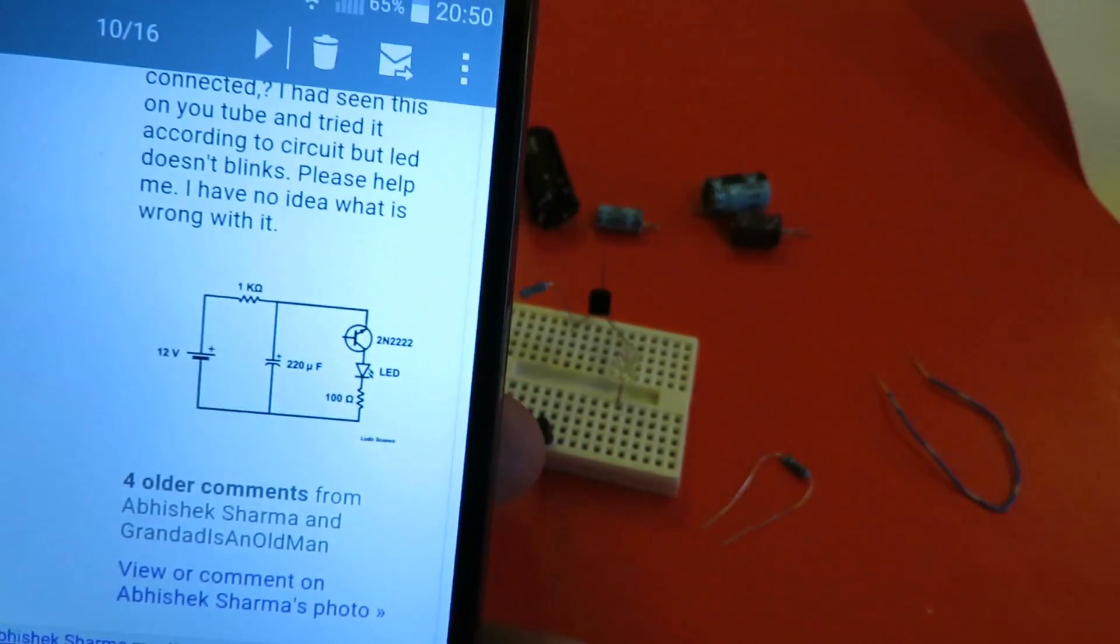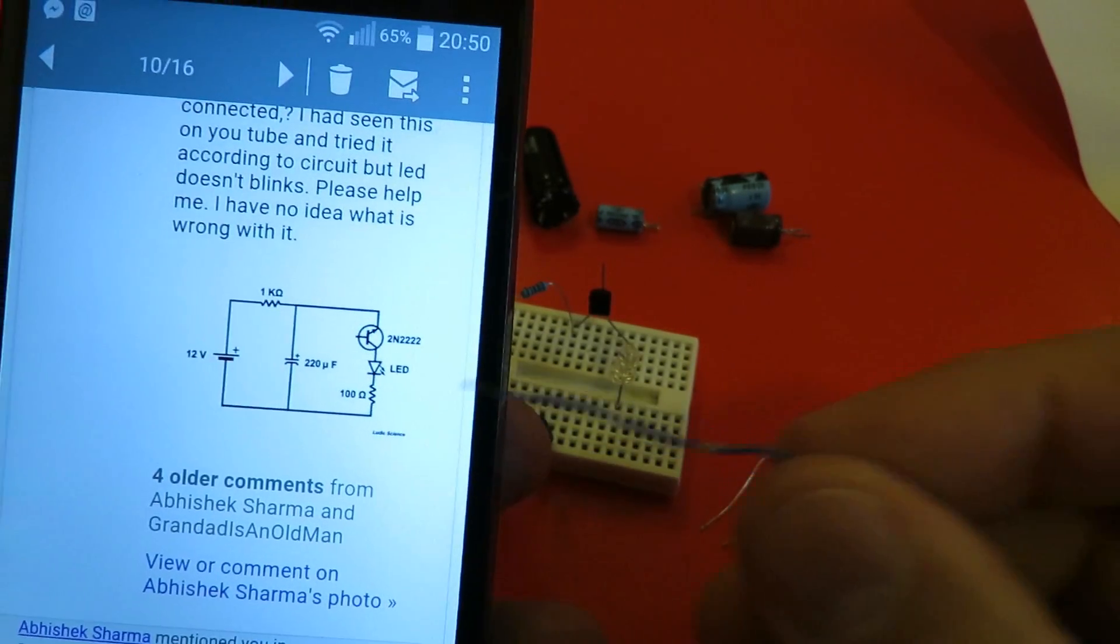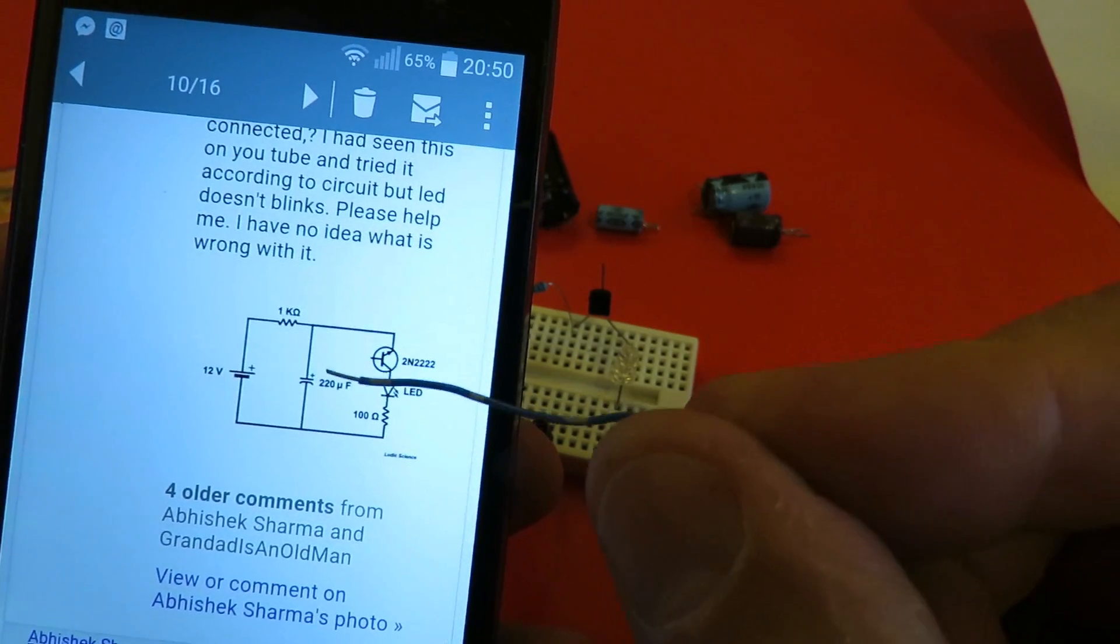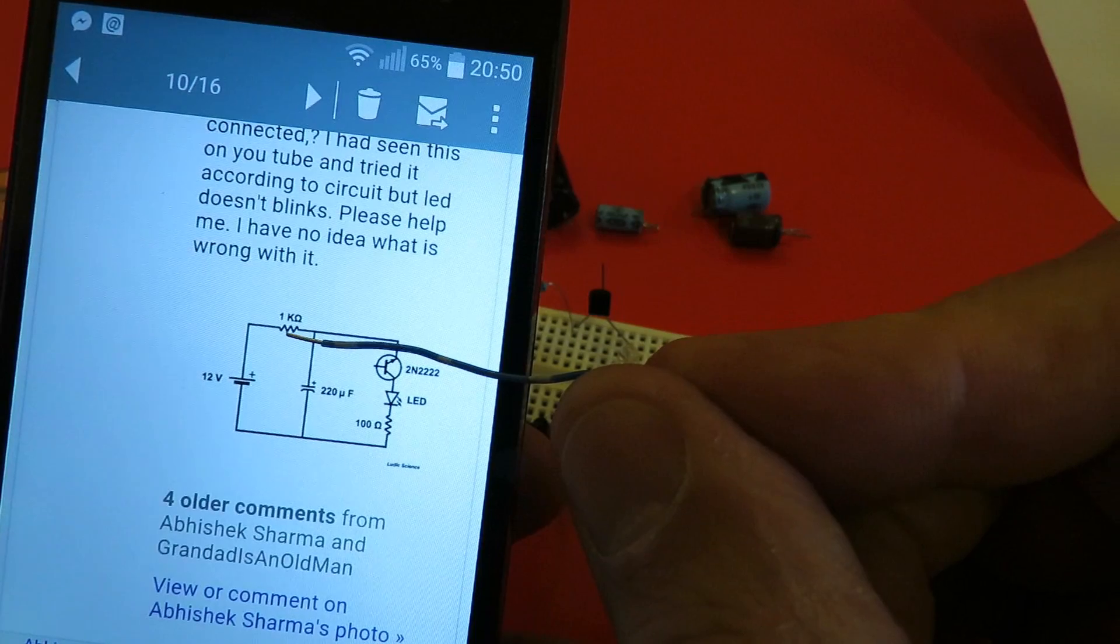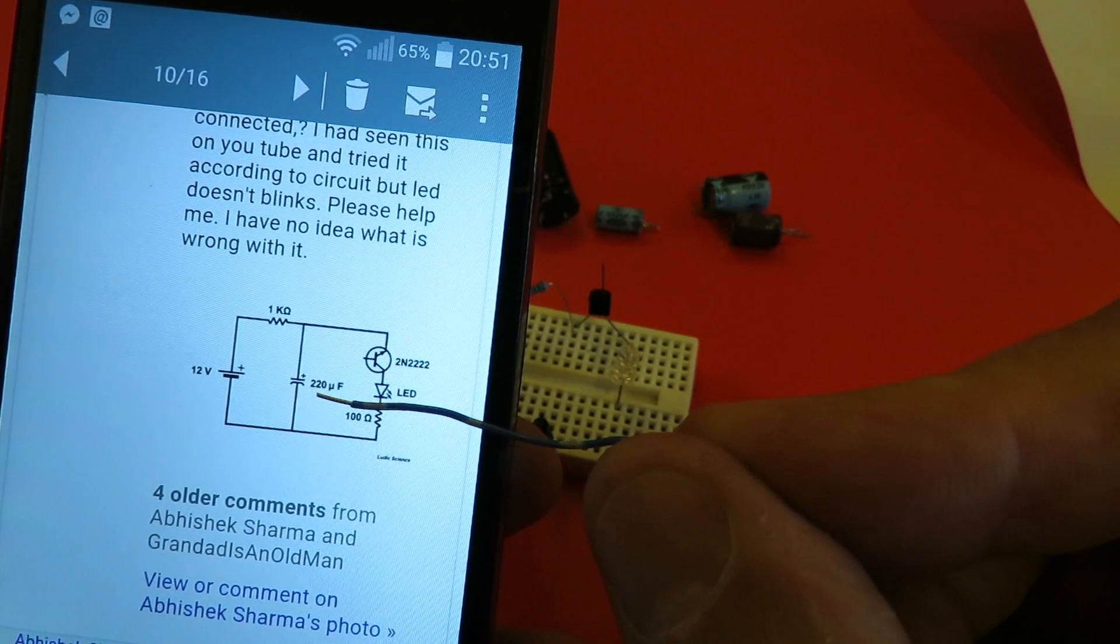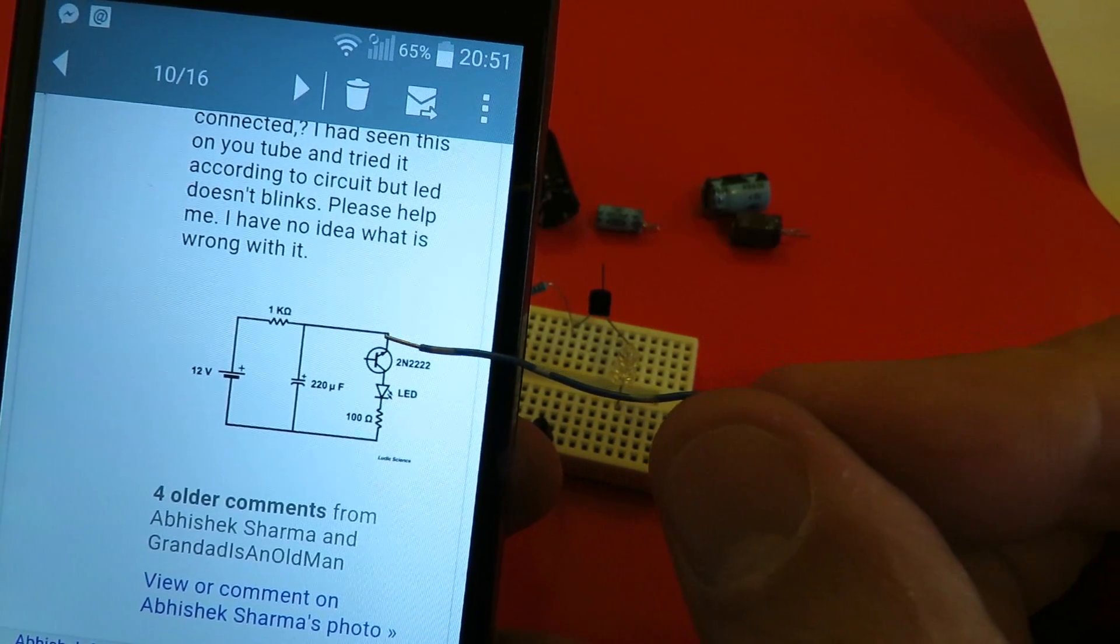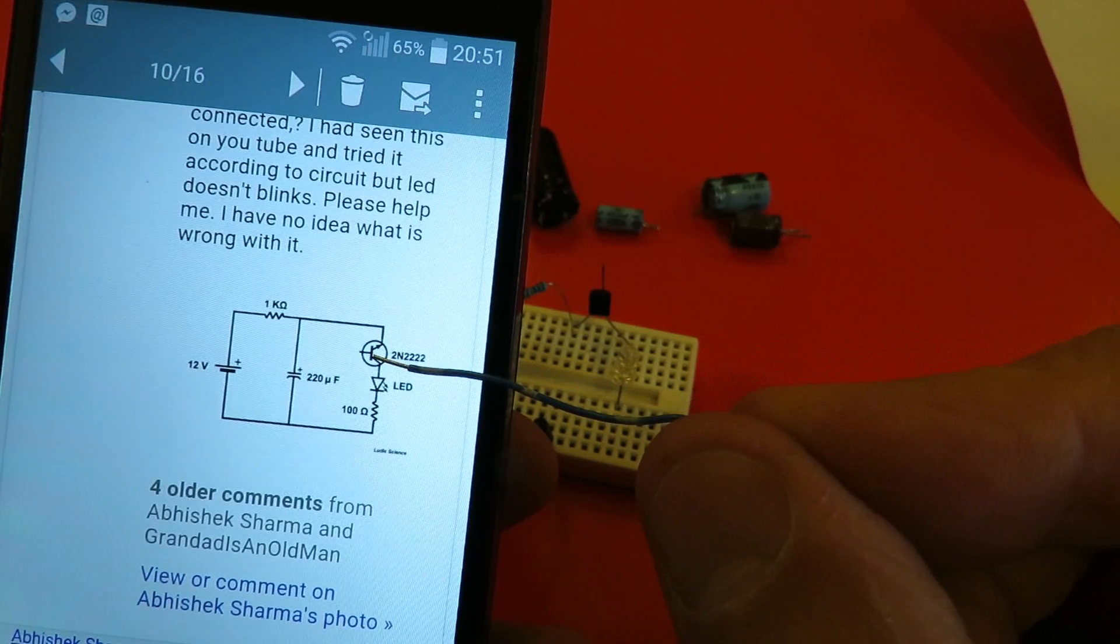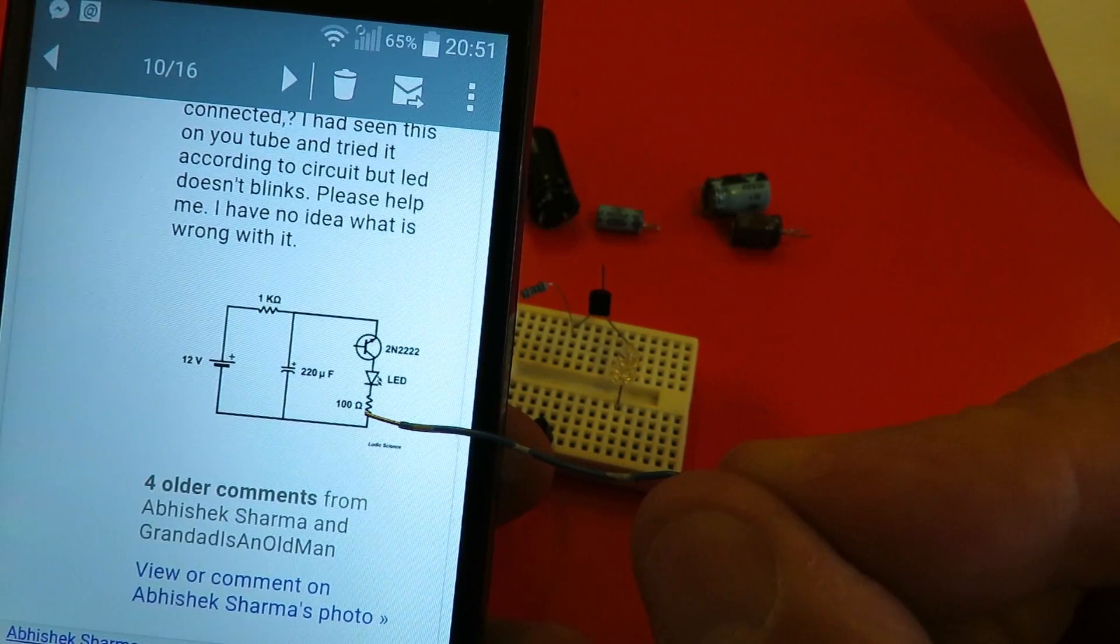The difference between the two is on Ludic Science's one he's got the battery, 1k ohm resistor, a 220 microfarad electrolytic capacitor, and then over here he's got the transistor, LED, and 100 ohm resistor.